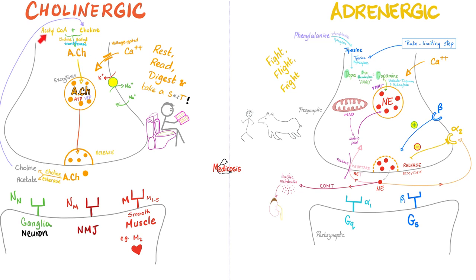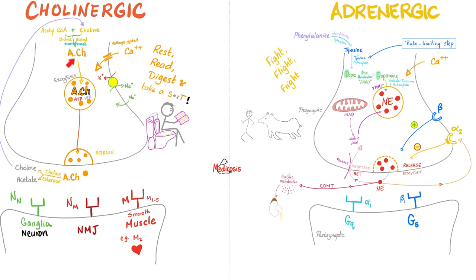Cholinergic system: how do you make acetylcholine? You need acetyl-CoA and choline — acetylcholine! The name of the enzyme that makes acetylcholine is choline acetyltransferase.